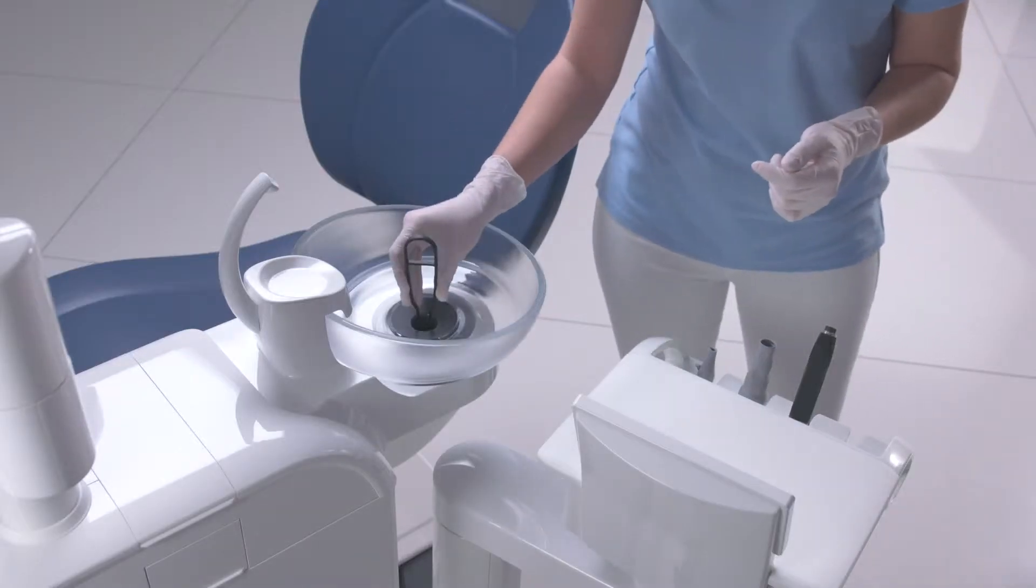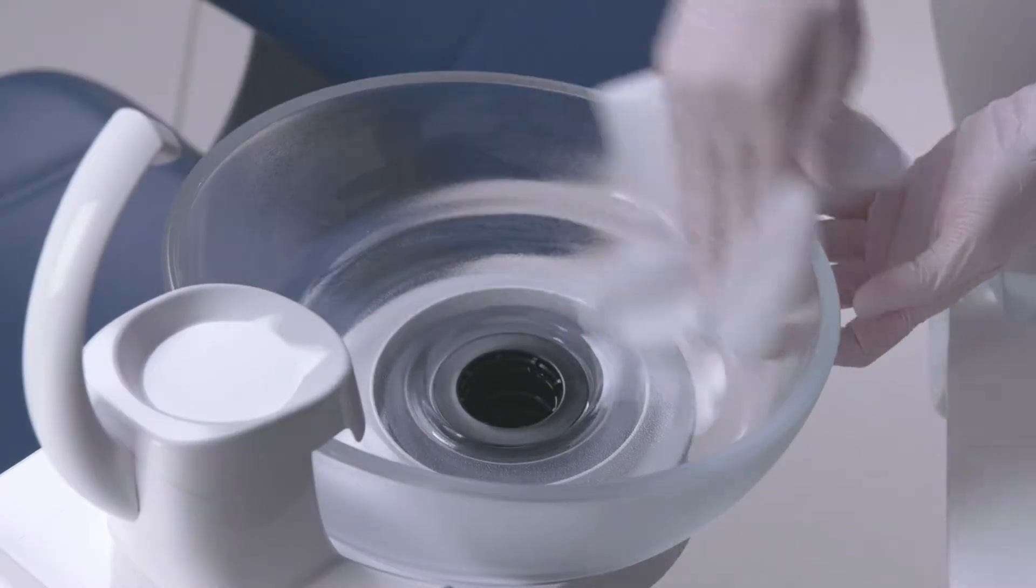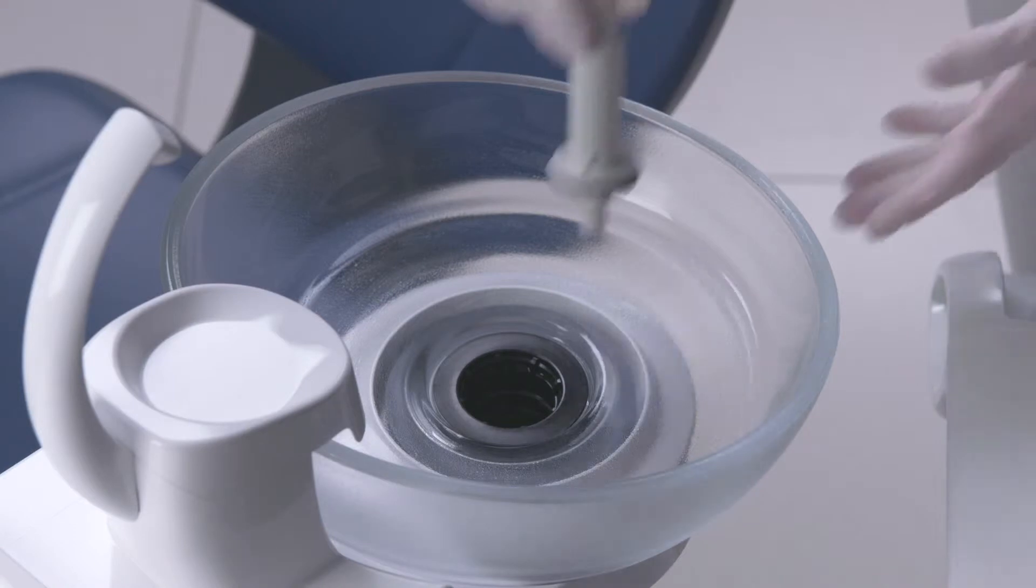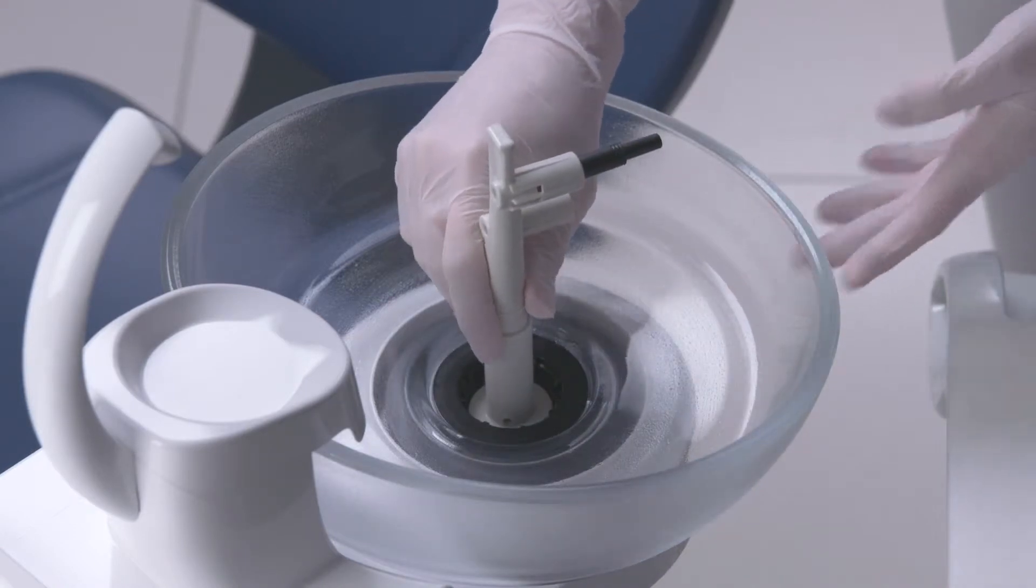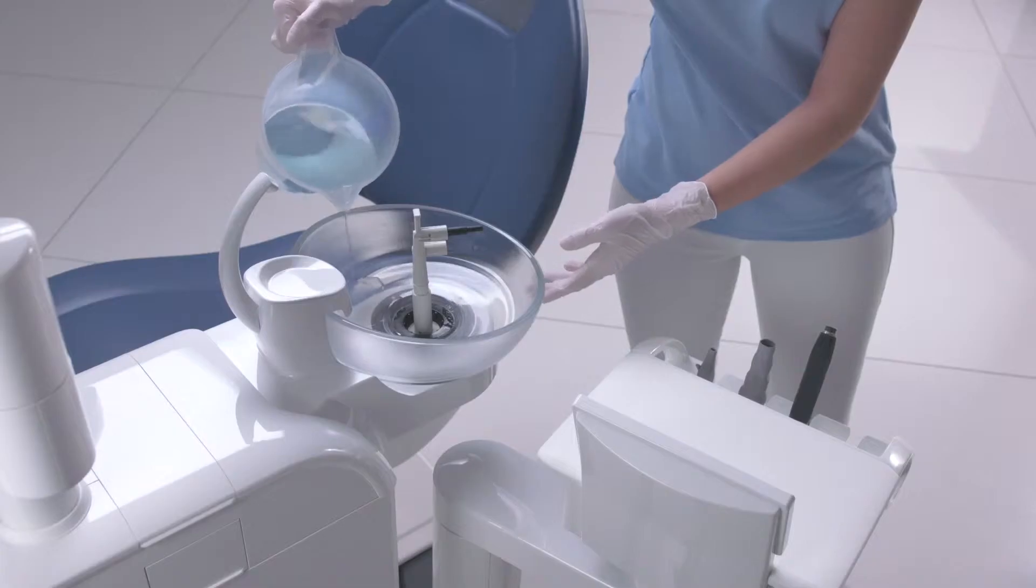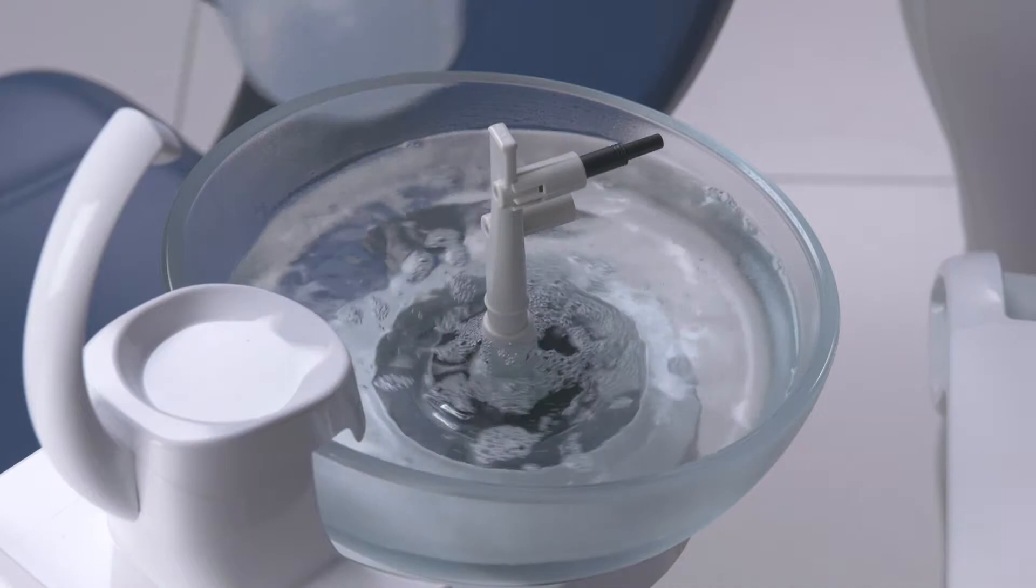Remove the gold trap, then clean the cuspidor. Insert the cleaning adapter, making sure it is inserted as far as it will go. Prepare the cleaning solution as per the manufacturer's instructions and pour this in the cuspidor.